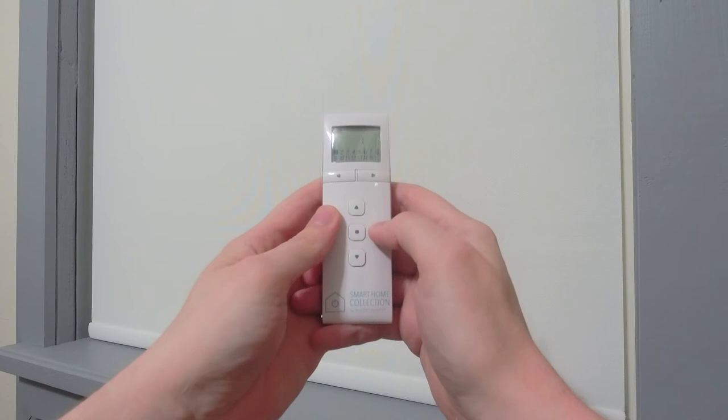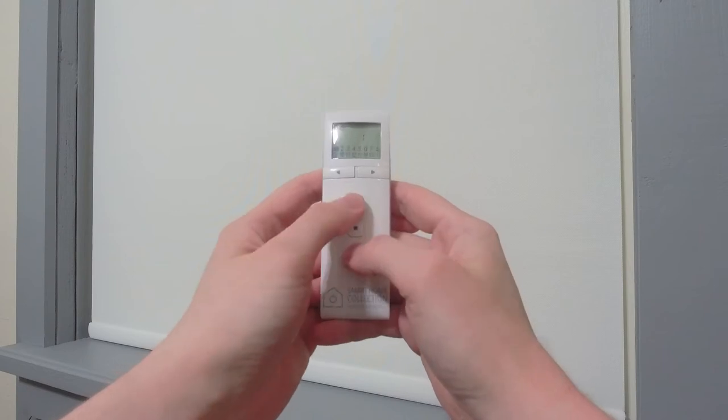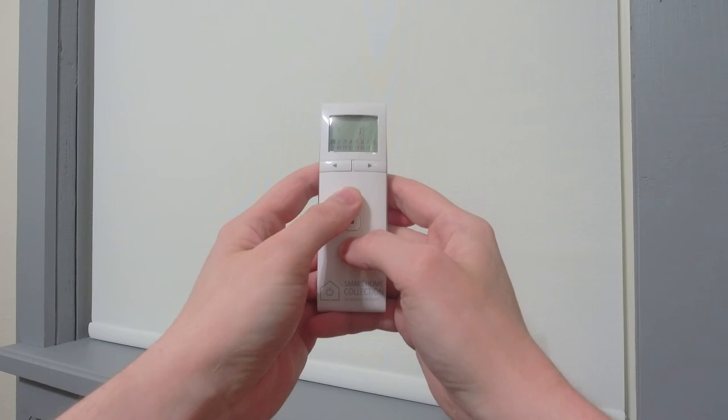To switch to Window Shadings from Roller mode, press and hold the up and down buttons on your remote at the same time. After a few seconds, the shade will jog once, and you can release the buttons.